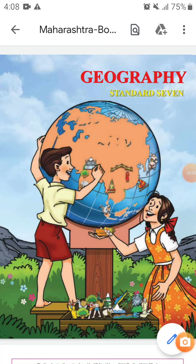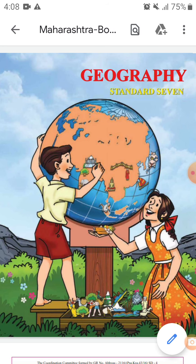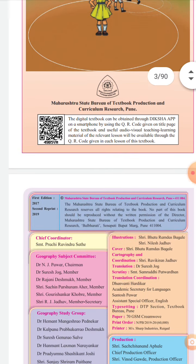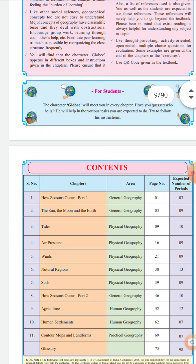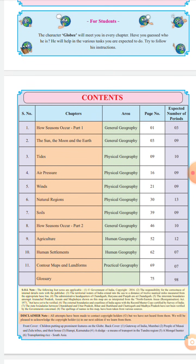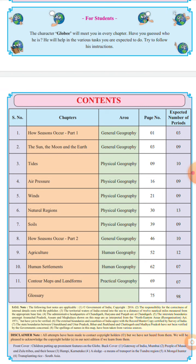Hello students, today we learn 7th standard geography. See the first page of your textbook — one picture is given. Our syllabus contains 11 chapters. The first chapter is 'How Seasons Occur,' Part 1.